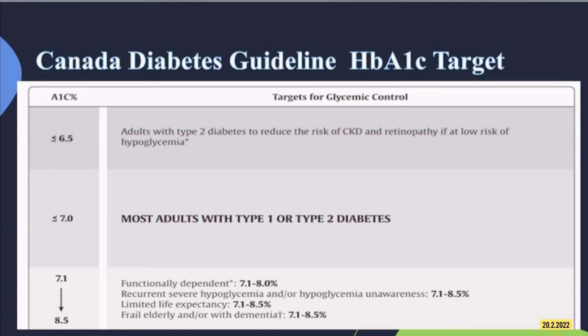For most adults with type 1 or type 2 diabetes, the HbA1c target should be less than or equal to 7%. For adults with type 2 diabetes who are at low risk of hypoglycemia, the target should be less than or equal to 6.5% to reduce the risk of CKD and retinopathy. For those who are functionally dependent, have recurring hypoglycemia, limited life expectancy, are elderly, or have dementia, an HbA1c target of 7.1% to 8.5% is acceptable.